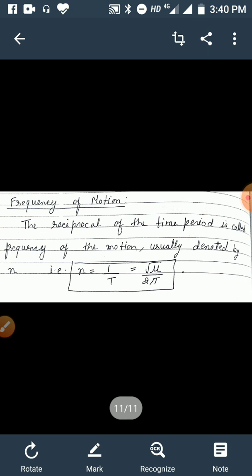Frequency of motion: the reciprocal of the time period is called the frequency of the motion, usually denoted by n. That is, n = 1/T = √μ / (2π).